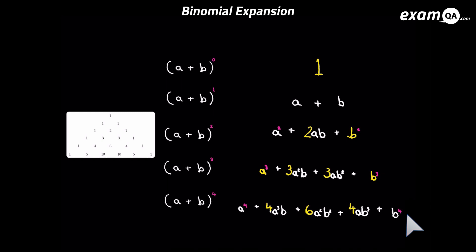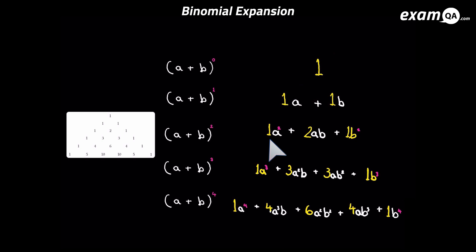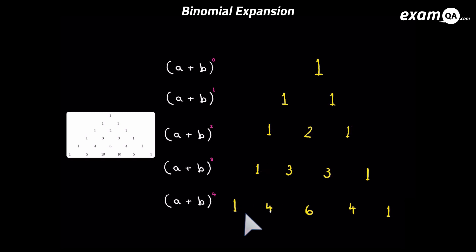So how does Pascal's triangle come into this? I'm going to put some ones in front of the letters — for example, a and b — because that one won't make any difference. So here we've got some ones and nothing's changed. Next, I'm going to get rid of all the a's and b's and those powers. And wow — we've got Pascal's triangle here. Isn't that amazing?